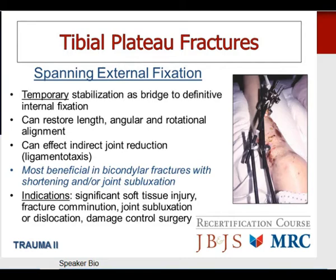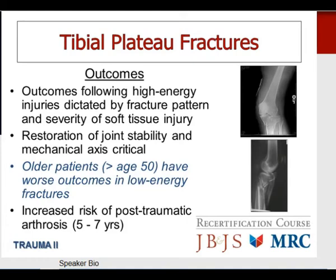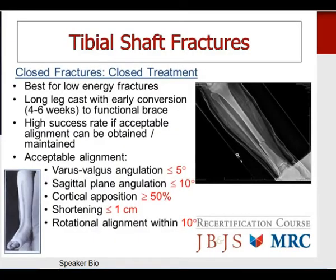Moving further down to tibial shaft fractures. Closed treatment is appropriate for low energy tibial shaft fractures using a long leg cast with early conversion within four to six weeks to a functional brace. Acceptable alignment includes coronal plane angulation less than five degrees, sagittal plane angulation less than 10 degrees, at least 50% cortical opposition, less than one centimeter of shortening, and rotational alignment accurate within 10 degrees.